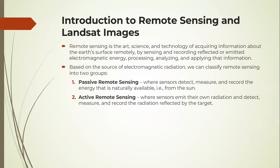That is passive remote sensing and active remote sensing. Passive remote sensing is where sensors detect, measure, and record the energy that is naturally available, that is energy that is reflected by surface features and that energy is the incident energies from the sun.